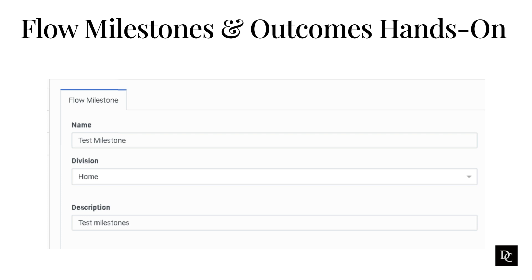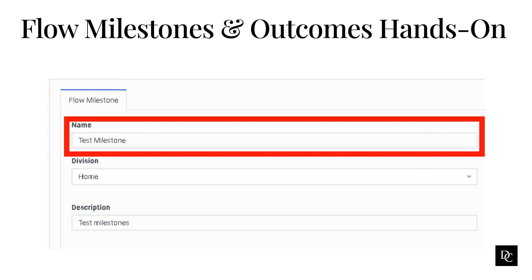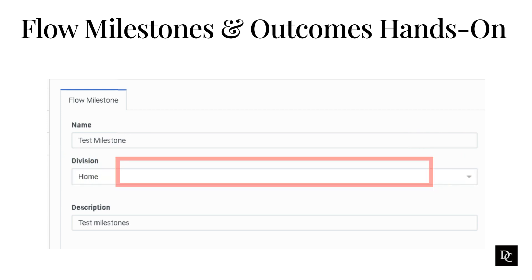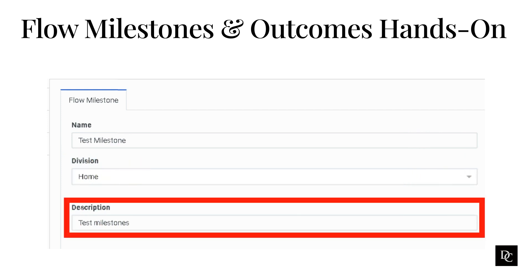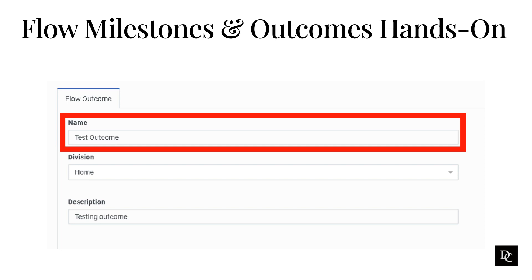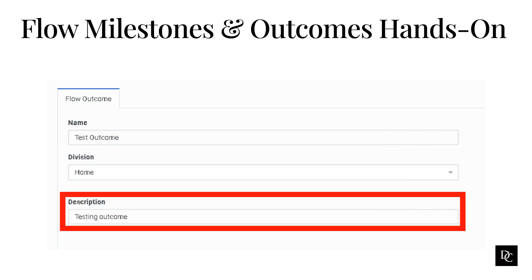Let's create a flow milestone. Click Flow Milestones under Architect and click the plus button. Type a descriptive name for the milestone — for example, Check Balance. Choose which division to put the milestone in; Home is default. Add a more detailed description of the milestone and click Save. Let's move on and create a flow outcome. Administrators and contact center managers use flow outcomes to gather data about self-service success. Click Flow Outcomes under Architect, then click the plus button. Type a descriptive name for the outcome — for example, Check Balance. Choose which division to put the outcome in; Home is default. Add a more detailed description and click Save.